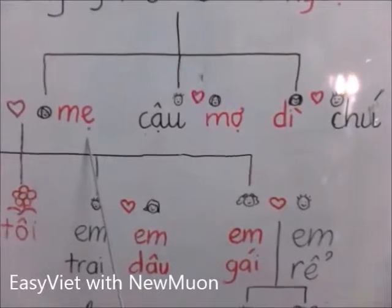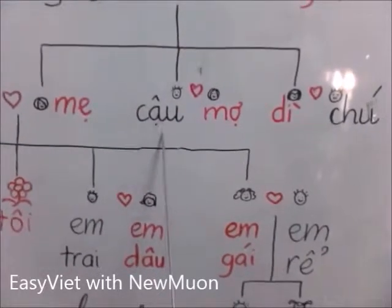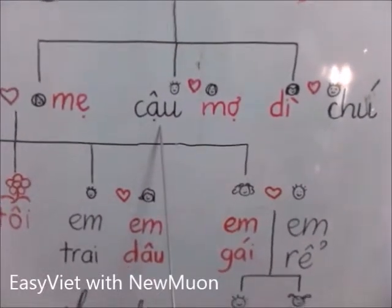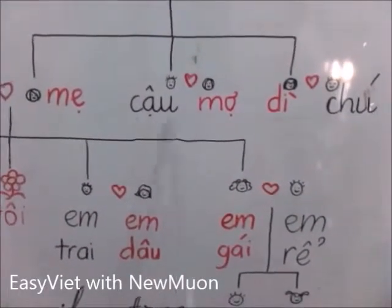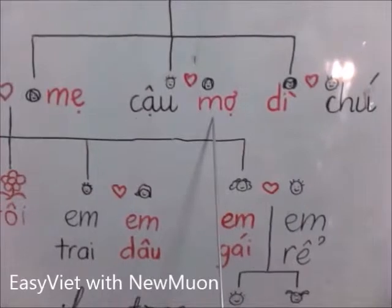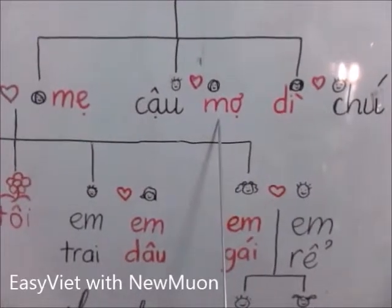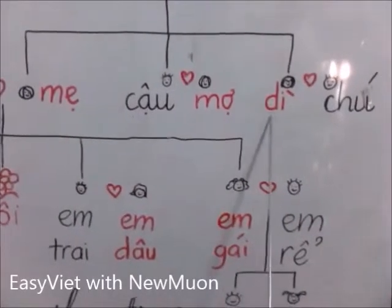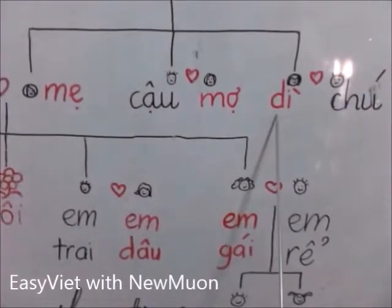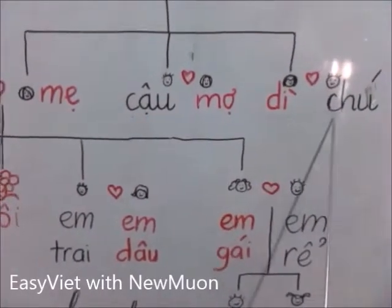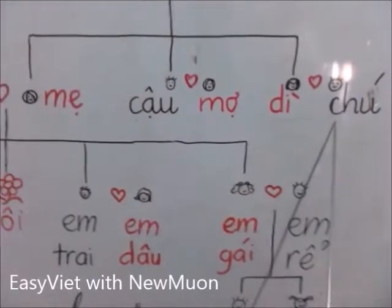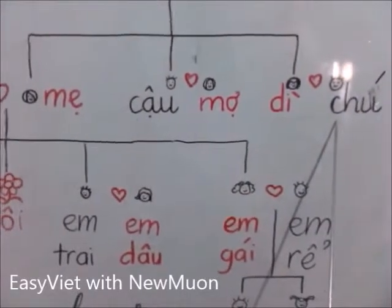Moving to my mother's side: my mother's brother is Cậu, and his wife is Mợ. My mother's sister is Dì, and her husband is Chú.